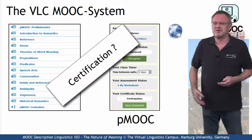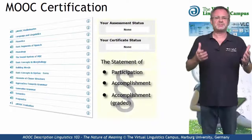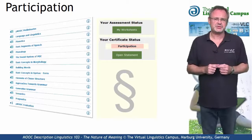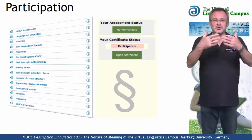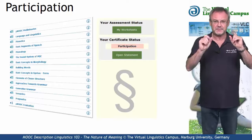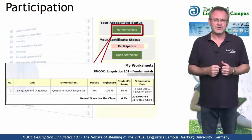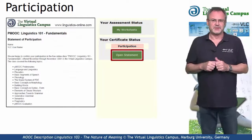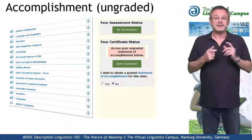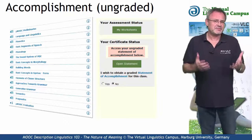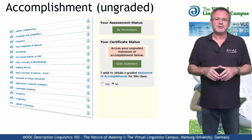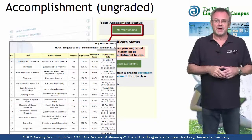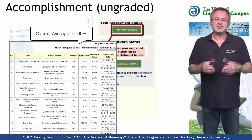And if you want a certificate, here are your options. The simplest option is the Statement of Participation, issued by the Virtual Linguistics Campus. You will receive such a certificate for regular and active participation, including the submission of at least one worksheet, and it is free. Once you have successfully submitted a worksheet, you will be eligible for such a certificate and can open it by hitting the Open Statement button. The second option is the Statement of Accomplishment, also free and issued by the Virtual Linguistics Campus. To receive this certificate, we not only want your regular participation, but also want you to complete the Mastery Worksheets — our electronic tests, one for each unit — and achieve an overall score of at least 60%.